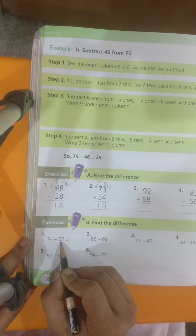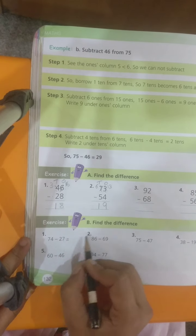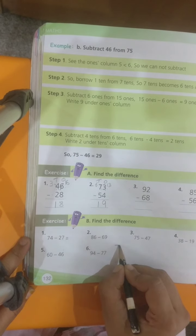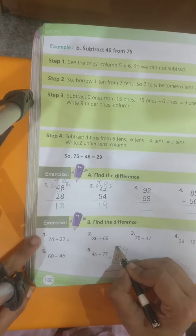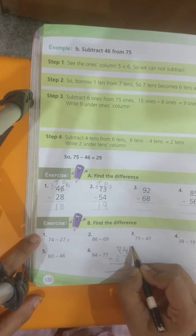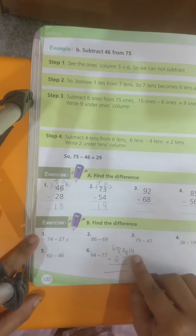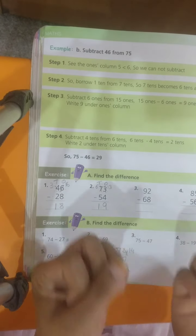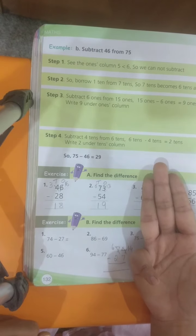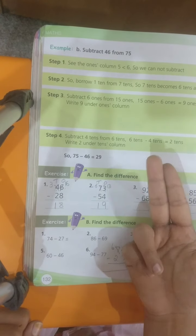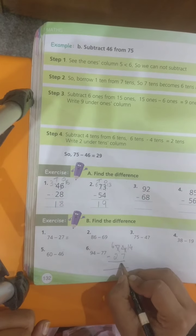74 minus 27. You should write like this: 74 minus 27. And then do. Borrow because I have a small number on the top. 14 minus 7. 14 in the mind, 7 in your finger. Before 14, 13, 12, 11, 10, 9, 8, 7. So, my answer is 7.